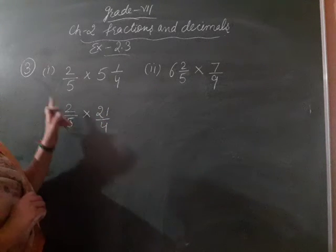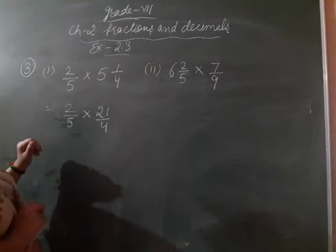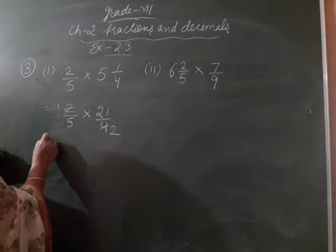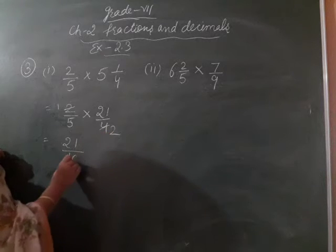Now numerator, denominator mein cutting hoti hai toh, we have convert into the lowest term. 2, 1's are 2. 2, 2's are 4. Clear? 21, 1's are 21. 5, 2's are 10.